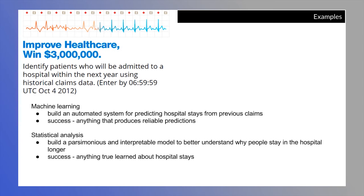If instead of the prediction competition I had been interested in the science of insurance claims and hospital stays, I would have performed a more traditional statistical analysis — building a parsimonious and interpretable model. Beyond the quirky demographic fact about pregnant women, you might want to learn if certain combinations of claims lead to greater propensity for hospital stays, enabling earlier treatment of people. Success in this case would be anything true learned about hospital stays from insurance claims data.